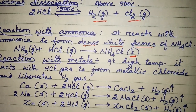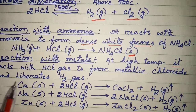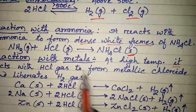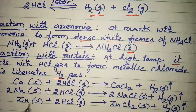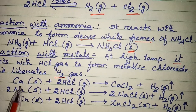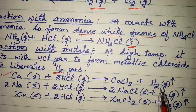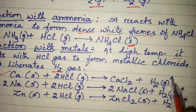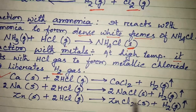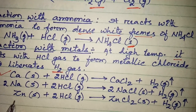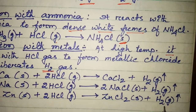Then, reaction with metals. At high temperature, dry HCl gas reacts with metals to form metallic chlorides and liberates hydrogen gas. For example: calcium with 2HCl gives calcium chloride plus hydrogen gas; 2 sodium with 2HCl produces sodium chloride plus H₂ gas; and zinc with HCl produces zinc chloride and H₂ gas.